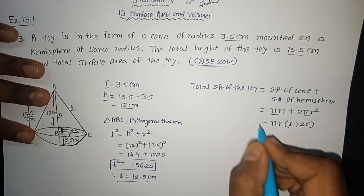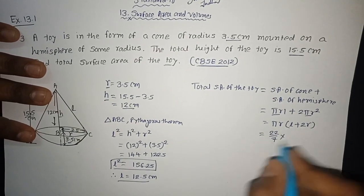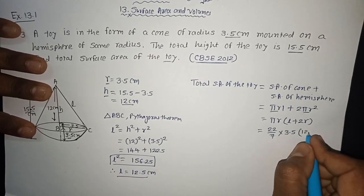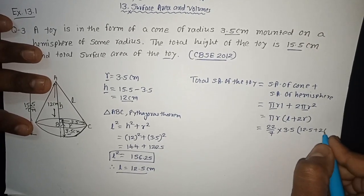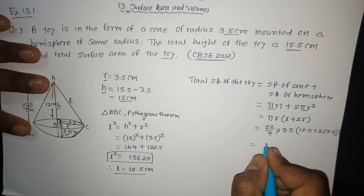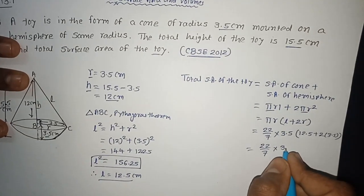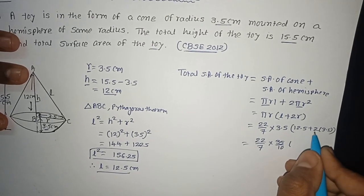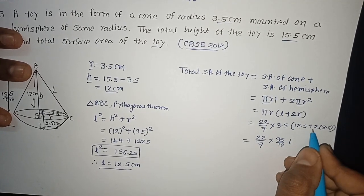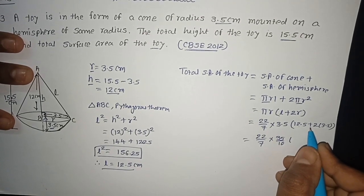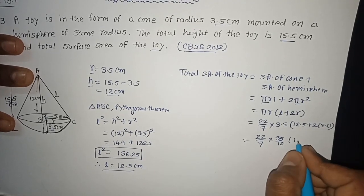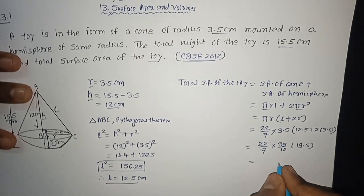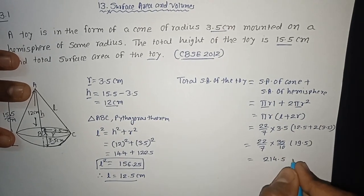Now substituting the values — π = 22/7, r = 3.5 = 35/10, L = 12.5, and 2r = 7 — we get: 22/7 × 3.5 × (12.5 + 7) = 22/7 × 3.5 × 19.5. This gives us a total surface area equal to 214.5 cm².